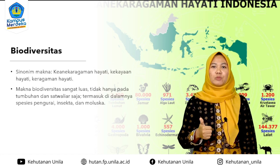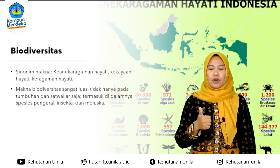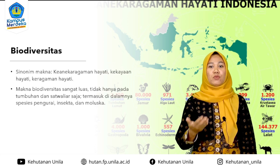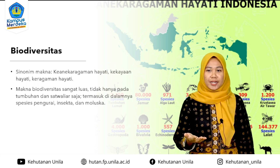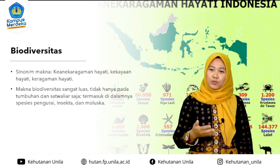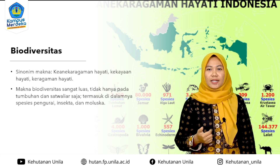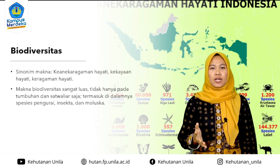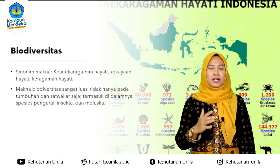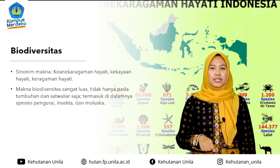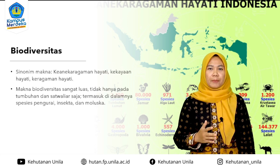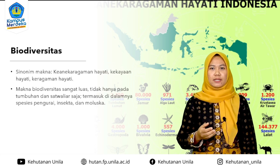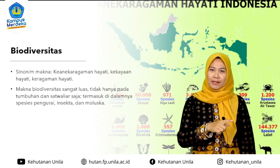Biodiversitas tidak selalu berbicara tentang flora dan fauna, tetapi di dalamnya juga ada jamur, ada alga laut, ada ikan laut, ada spesies semut, ada kumbang, ada lalat, ada pengurai, insekta, dan moluska. Banyak sekali, ada amfibia, ada reptil, ada kupu-kupu, ada capung. Namun dalam pembelajaran kita hari ini, kita hanya akan fokus pada hubungan antara tumbuhan dengan satwa atau fauna.